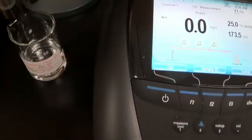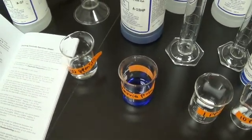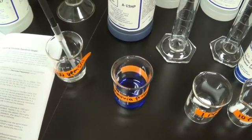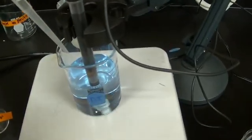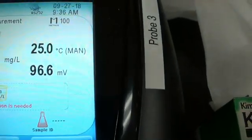Take the probe which is in the storage solution, dip it in DI water. And then I'm going to add 1 ml of the 1000 ppm standard. Wait for the millivolts to stabilize. It is now ready. The millivolts 42.6. I'll write that down.